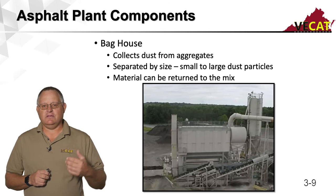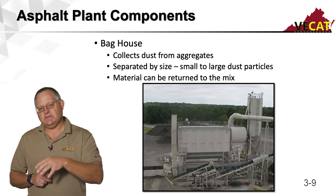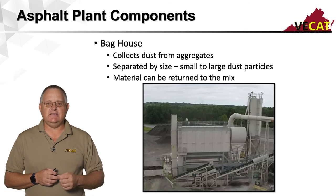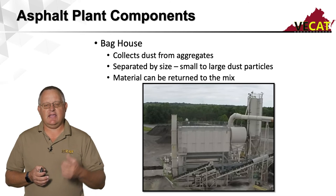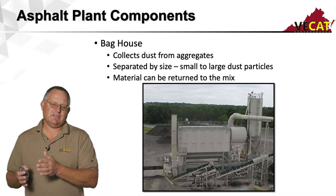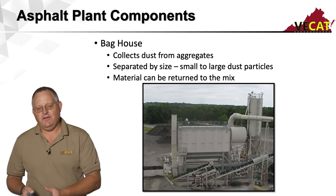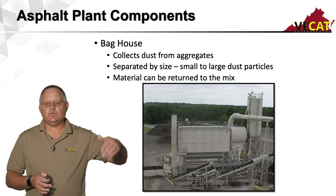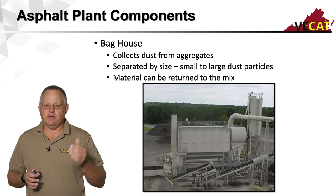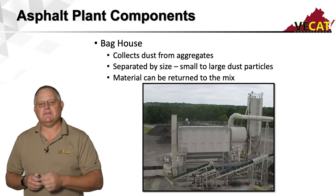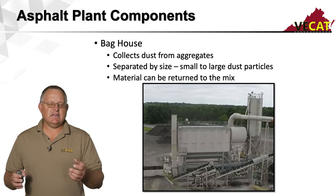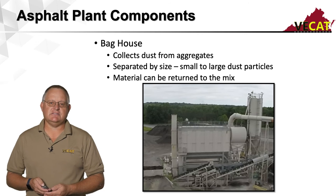Bag houses are extremely important. Think of it as a giant vacuum sucking out fine material as the aggregate is being heated — we don't want that released into the atmosphere. We collect the dust as the material is dried, and because they have different bags, we can separate that material and return it to the mix. If we've pulled out a lot of the fine portions through the bag house, we can reintroduce them. There's a small auger at the bottom that feeds conveyors working that material right back into the mix. It serves both an environmental purpose and allows us to reuse that dust.